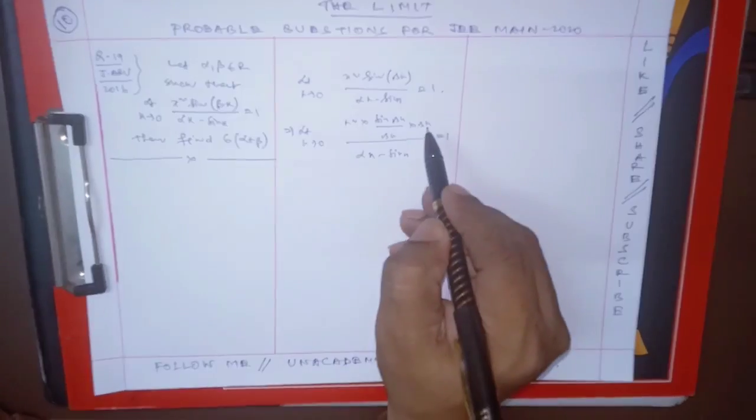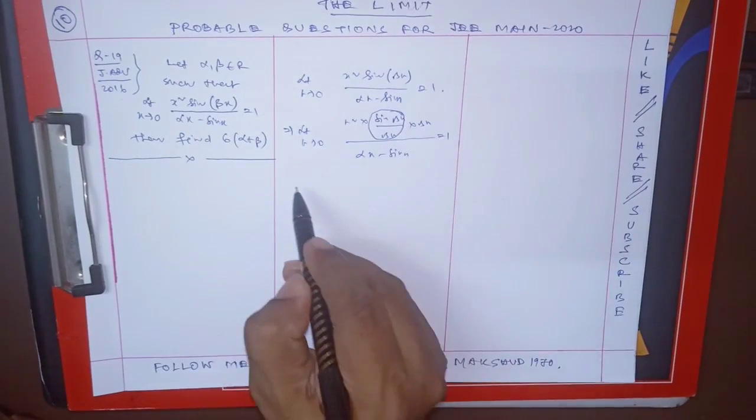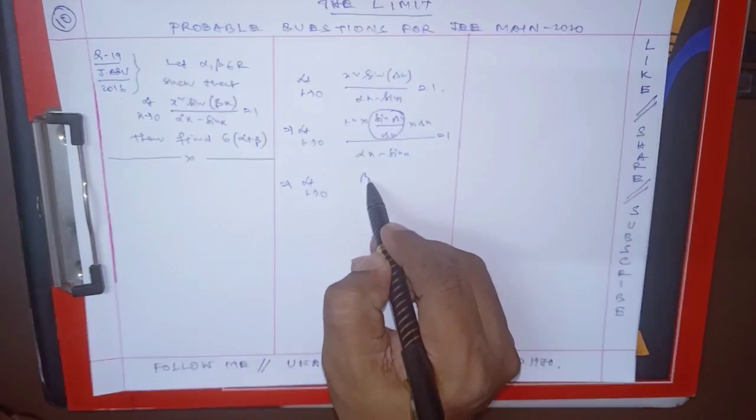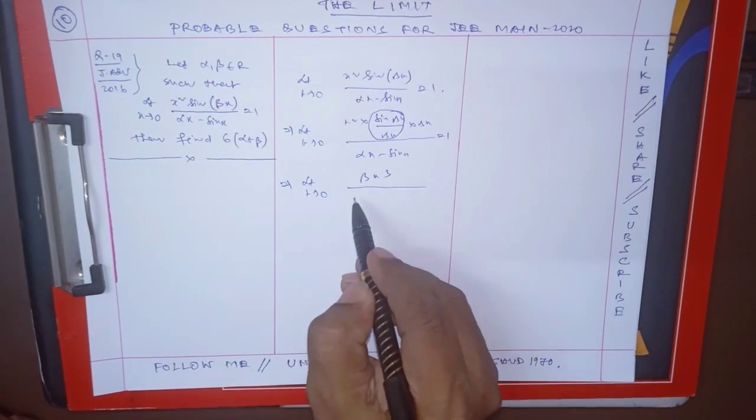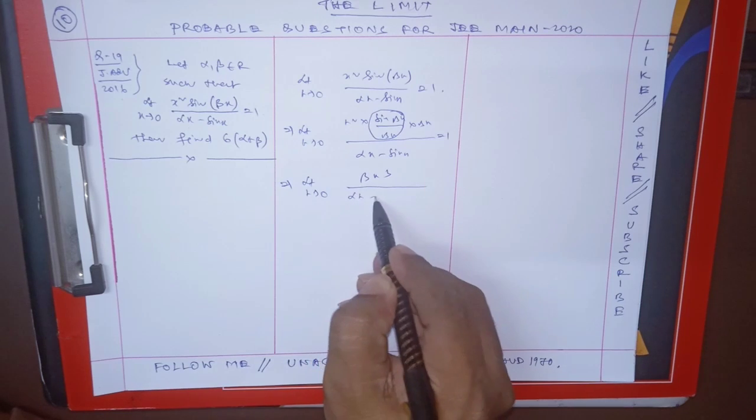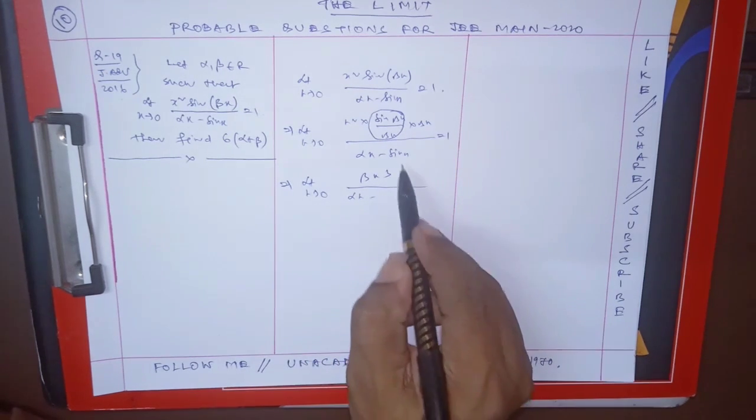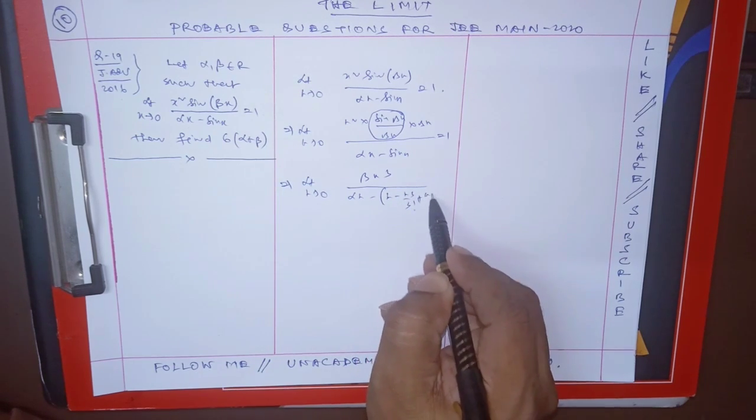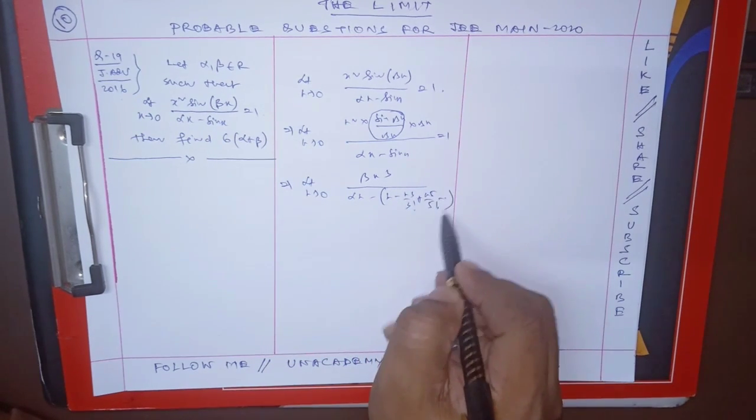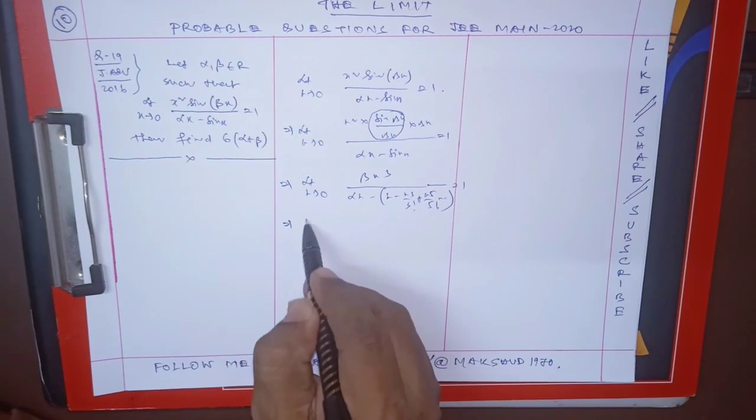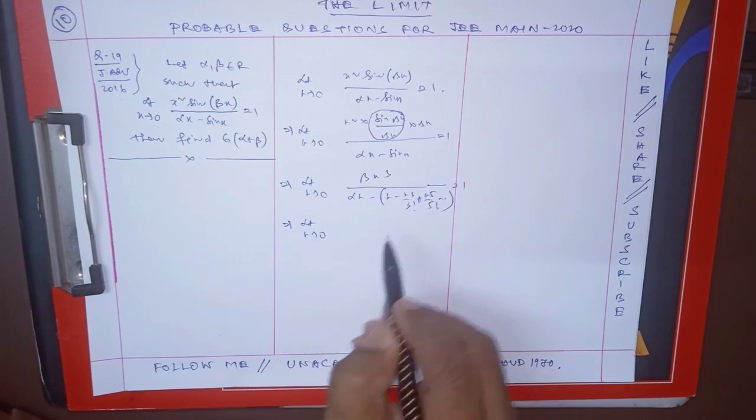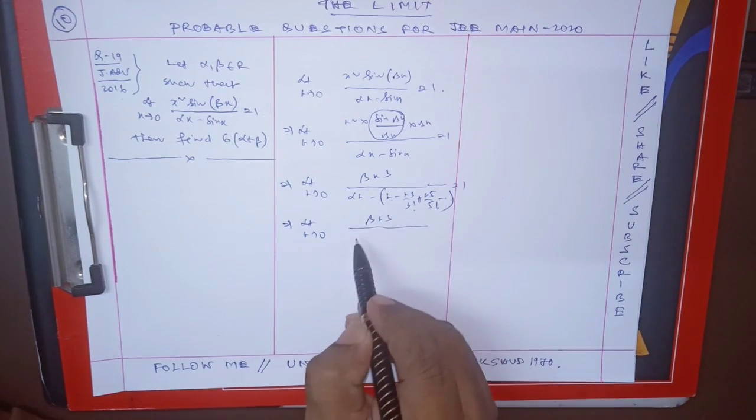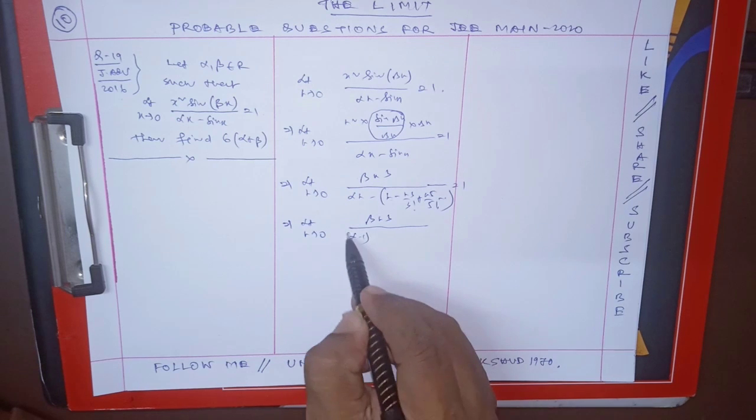So that means beta x cubed, and here is alpha x. Take the expansion of sine x. Sine x expansion is x minus x cubed by 3 factorial plus x to the 5 by 5 factorial like this, so this is equal to 1.